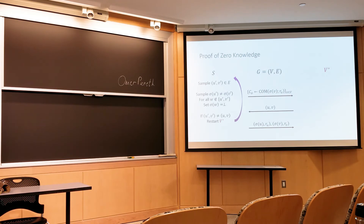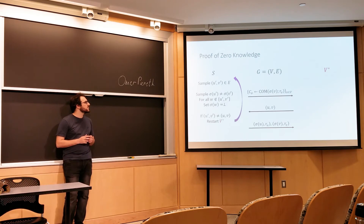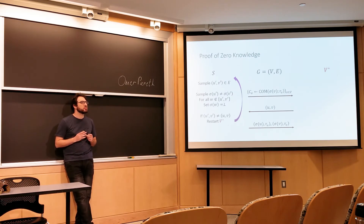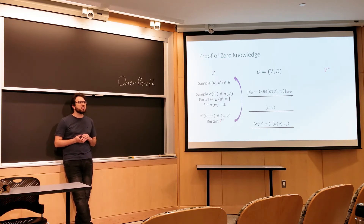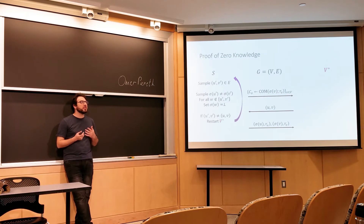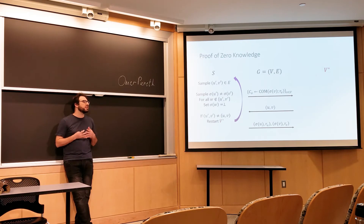This simulation runs in expected polynomial time, not strict polynomial time, because the probability the edges match is about 1/|E|. If unlucky, the simulator can restart many times. But the expected running time analysis shows this doesn't happen too much. After roughly |E| tries in expectation, the simulator will get a complete proof. Within polynomial time, it's very likely to hit the right edge.